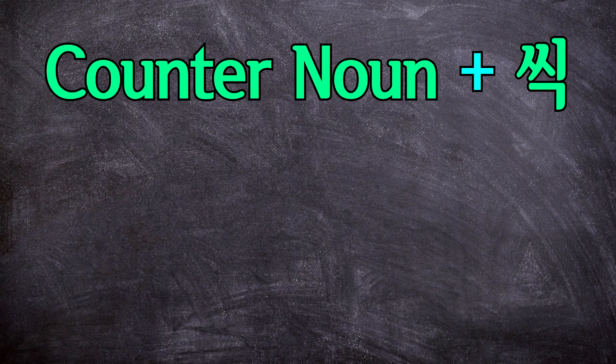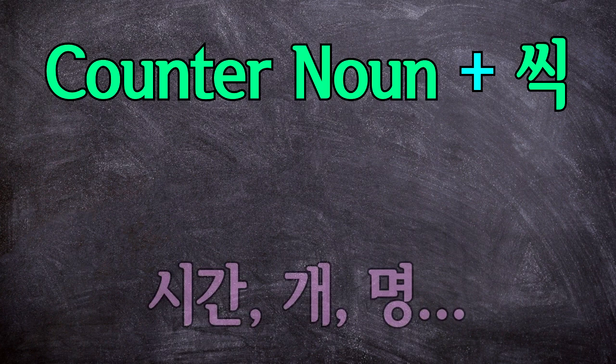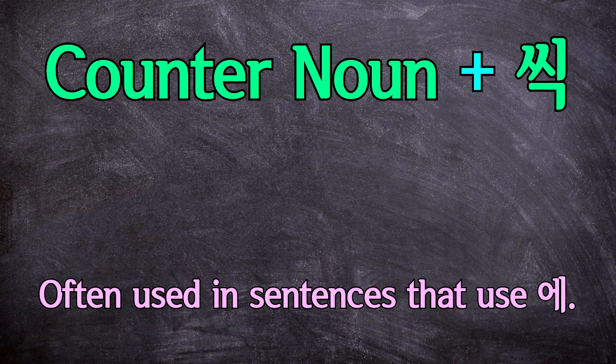씩 can attach onto the end of a word — usually a counter word. For example, 시간 for hour, 개 for objects, 명 for a person, etc. 씩 will often attach onto the end of whatever counter word is used together with the particle 에.